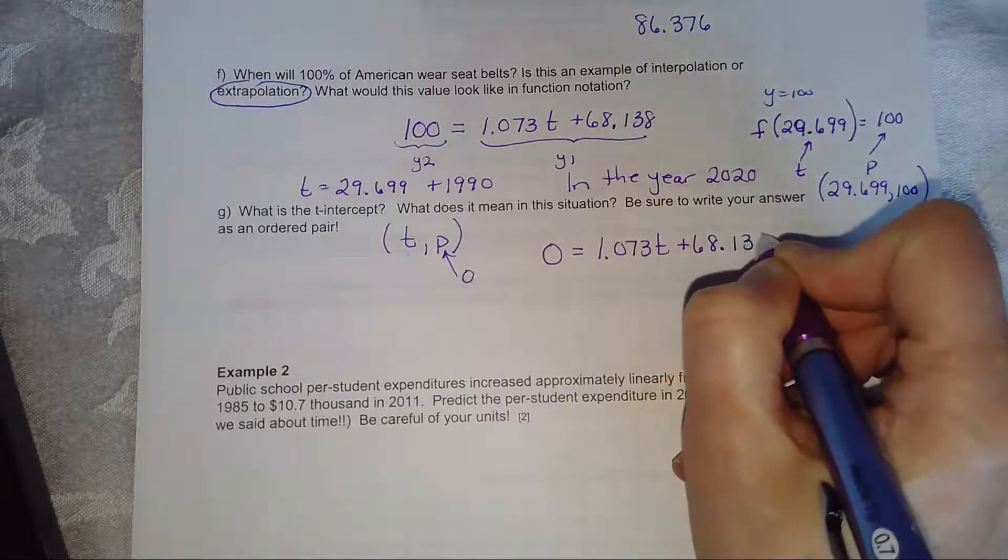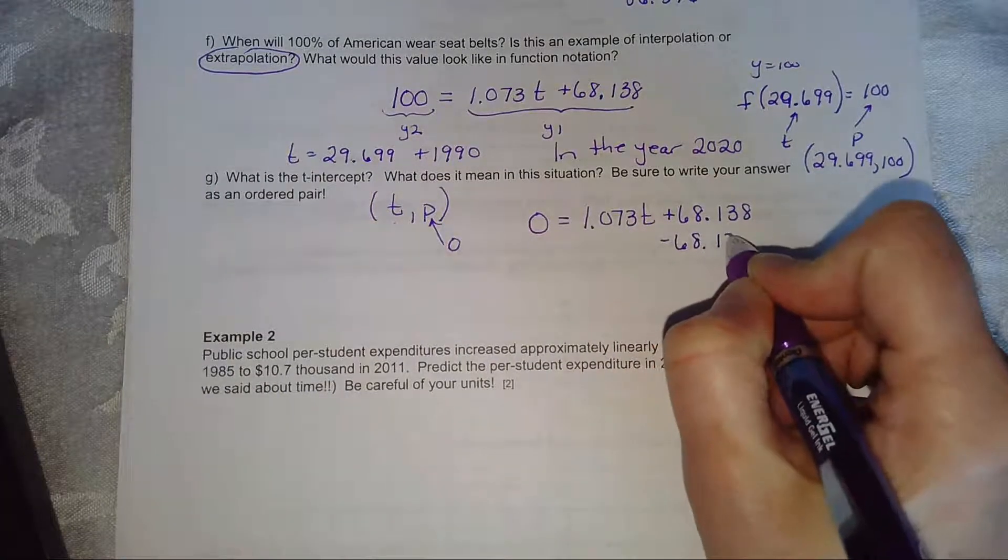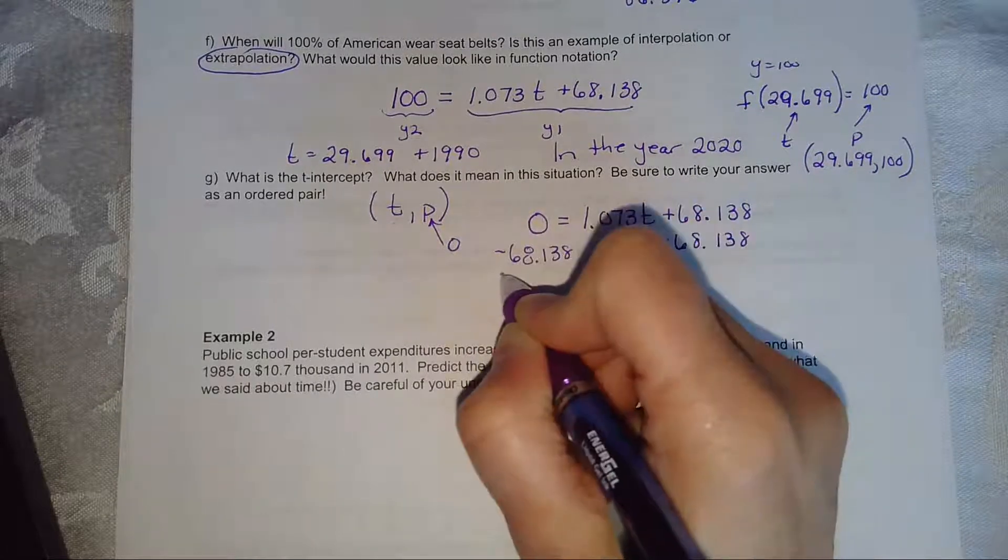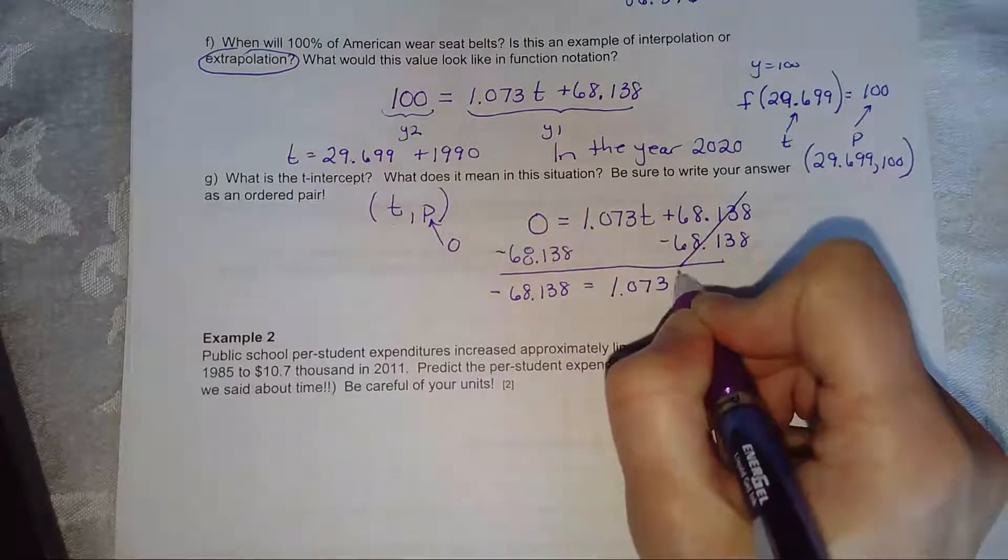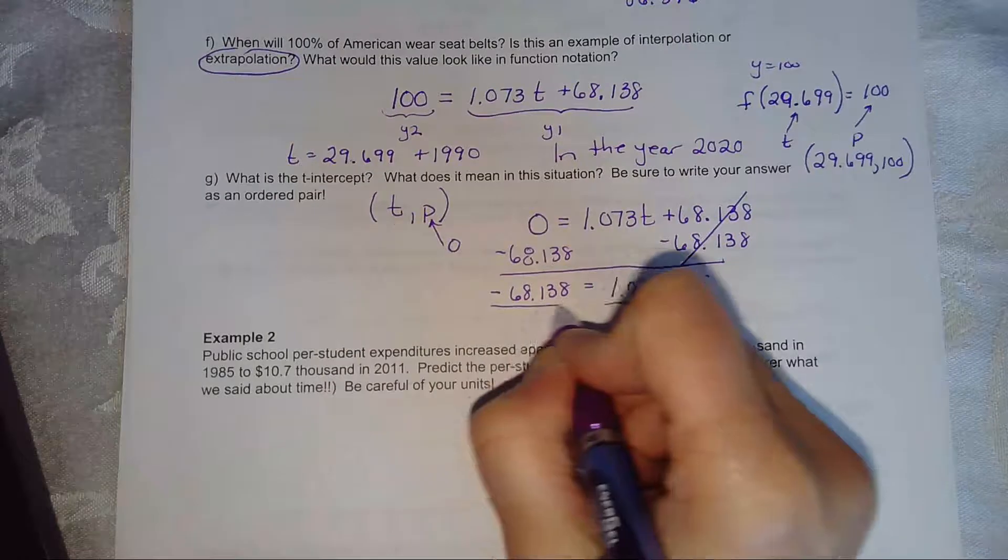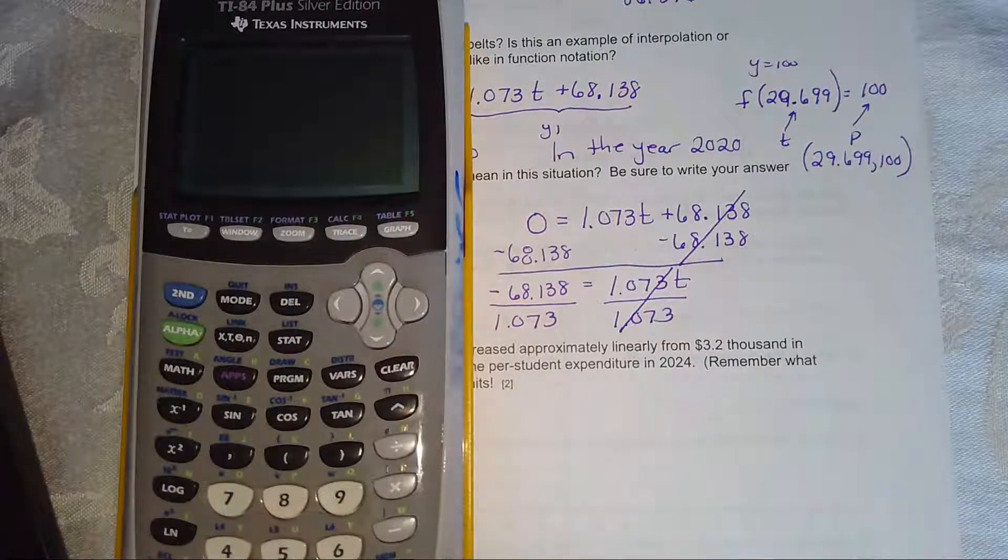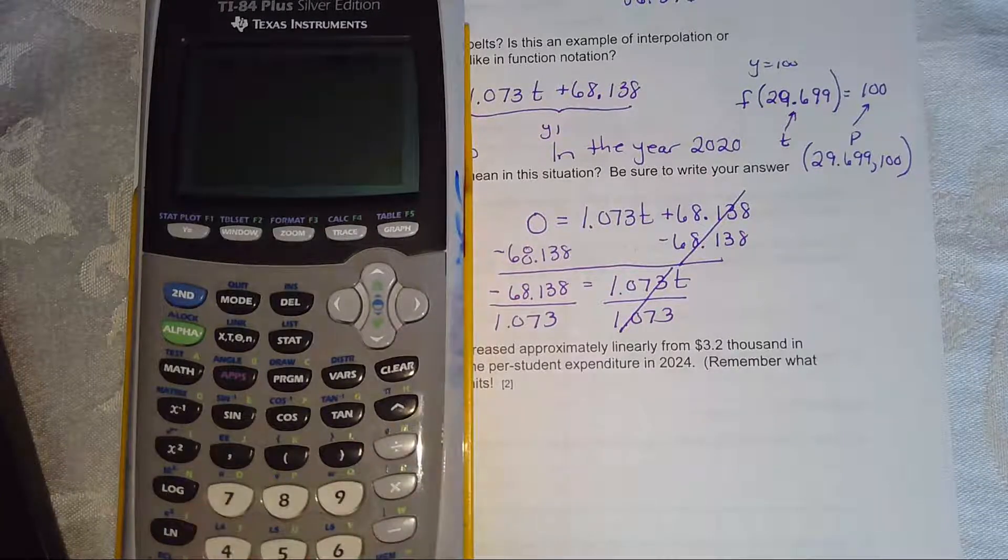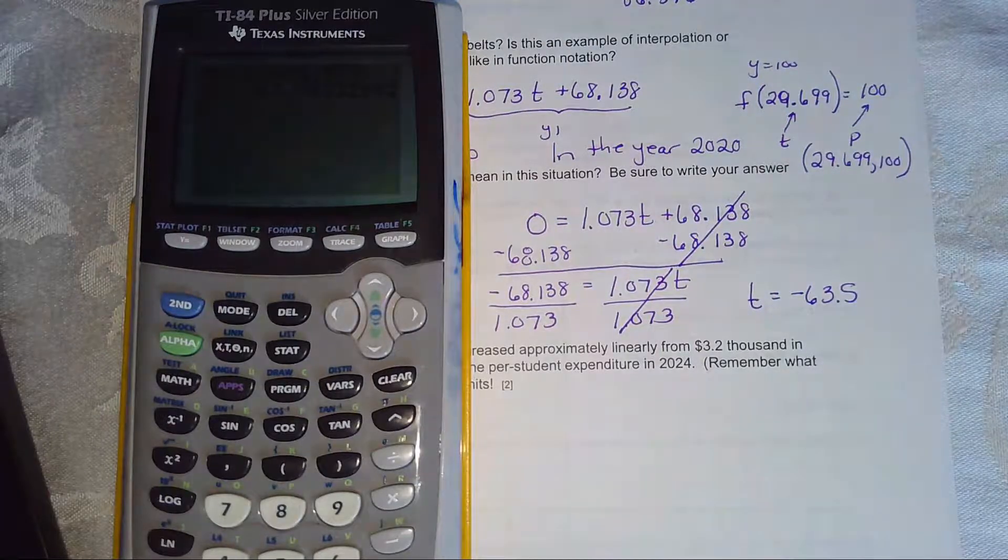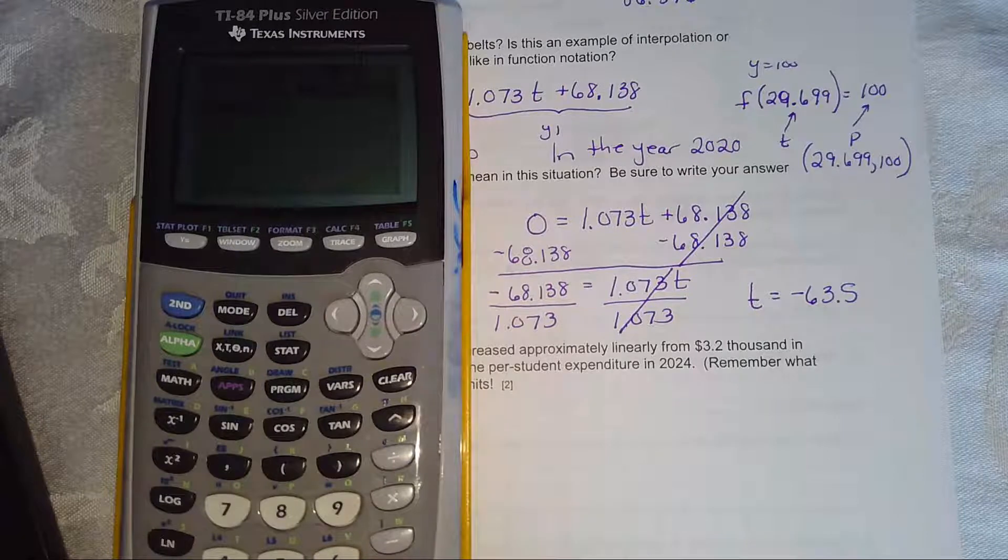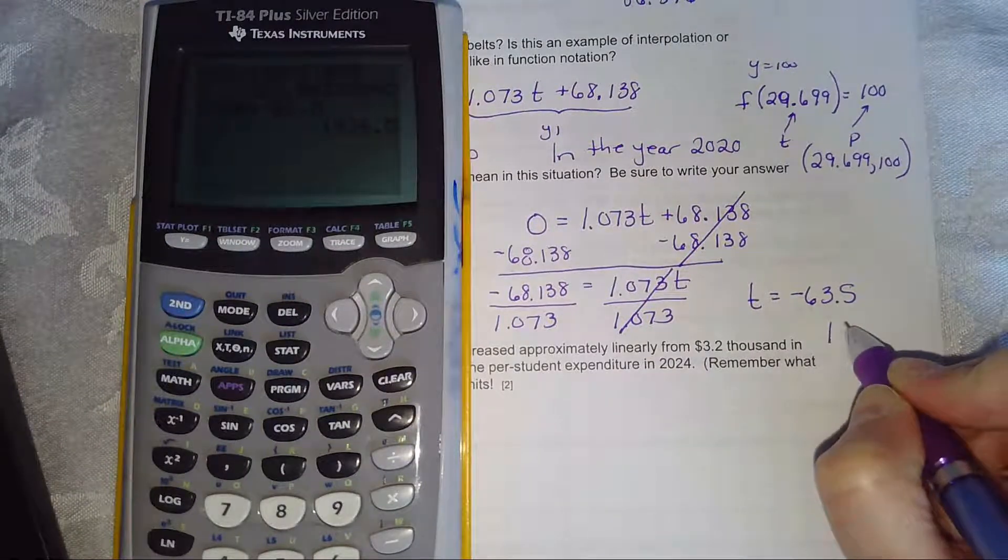But if you don't want to use the table key, we can calculate this out by hand. So we'll subtract 68.138. And then we'll divide. So I wanted you to be aware you can get a negative t value. That just means it happened before 1990. So I got t to be negative 63.5. So 1990 plus negative 63.5. Looked like this happened. If we round it to the closest year, they would probably want 1927.